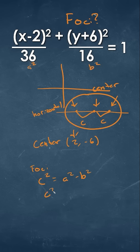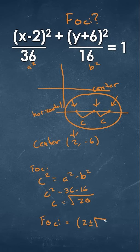So if we plug in that, we're going to have 36 minus 16. So C is going to equal the square root of 20. So then our foci are going to be equal to 2 plus or minus the square root of 20, comma, negative 6.